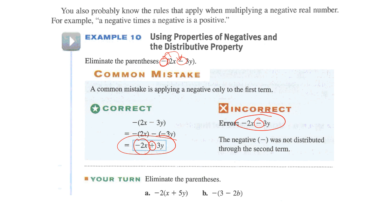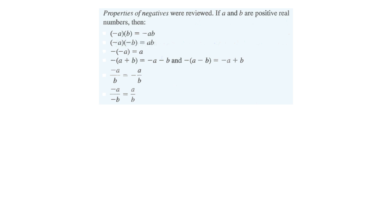Try these two here. Correct answer, negative 2x. Negative distributes minus 2 times 5 is 10y. And then we'd have negative 3y plus and negative times a negative positive 2b.